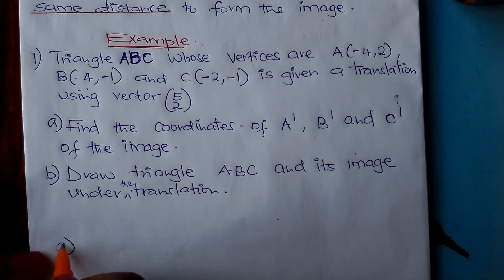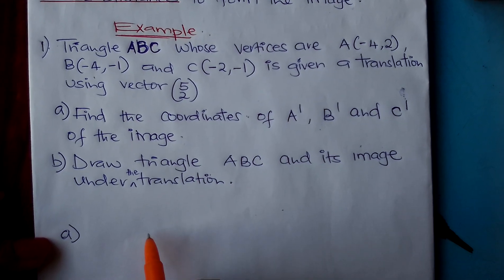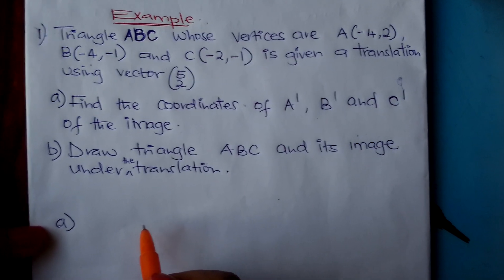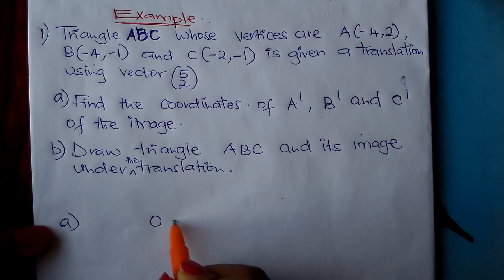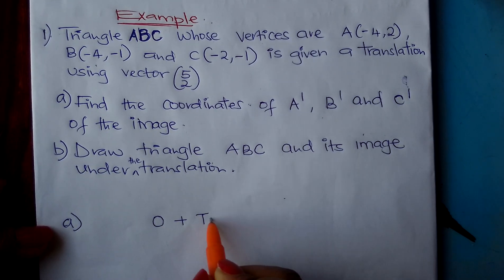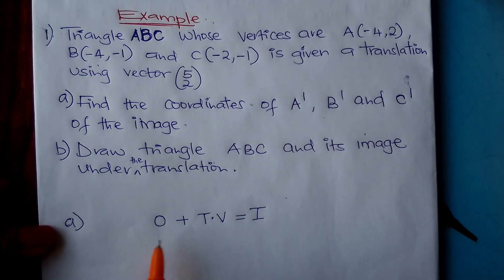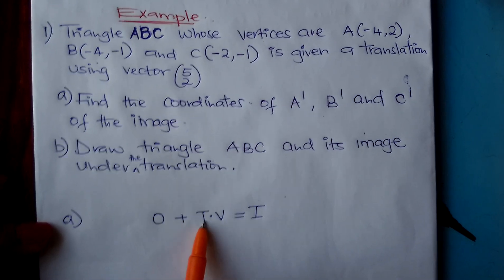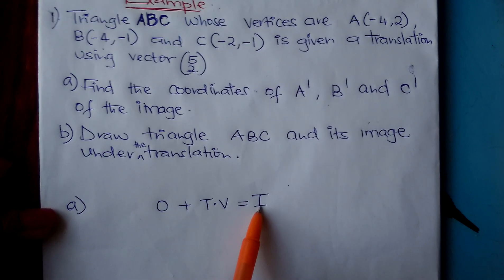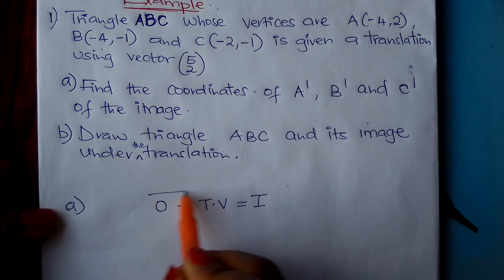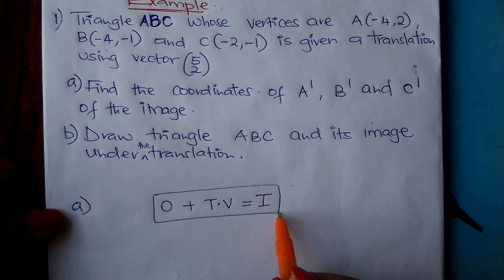How do you go about this? There is a simple formula that helps you to translate. The formula is O + TV = I. That is: object plus translation vector gives you the image. Put this formula in mind.